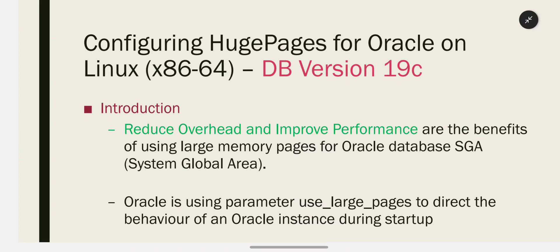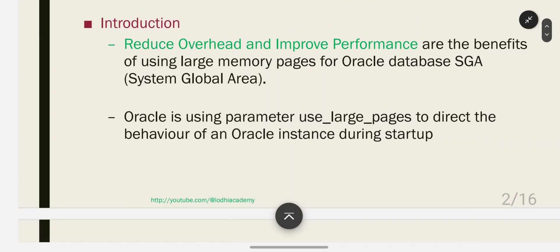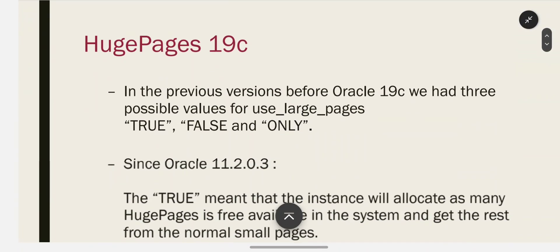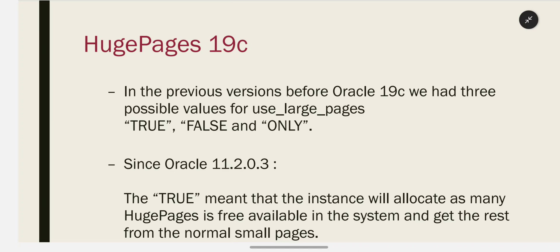Oracle uses the SGA (System Global Area) with the parameter use_large_pages to direct the behavior of an Oracle instance during startup. In previous versions before Oracle 19c, there were three possible values for use_large_pages: true, false, and only.